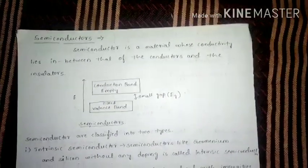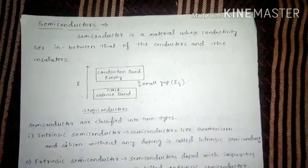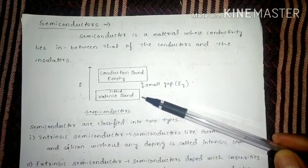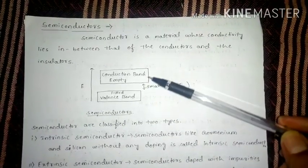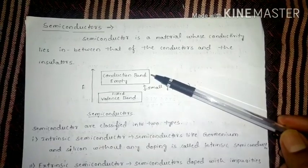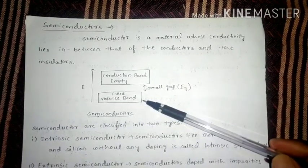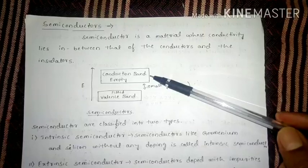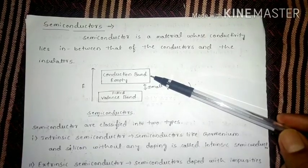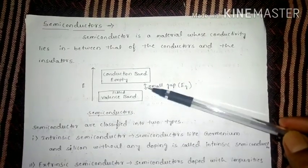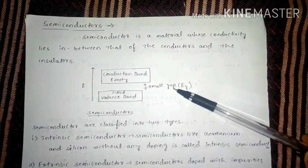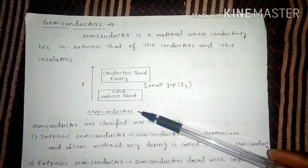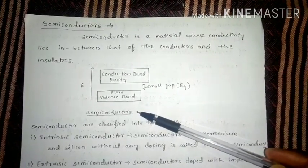You have studied the band theory. In band theory, there will be a valence band and there will be a conduction band. In semiconductors, the valence band will always be filled with electrons, the conduction band will always be free, and these two bands will be separated by a small energy gap. This is the condition of a semiconductor.